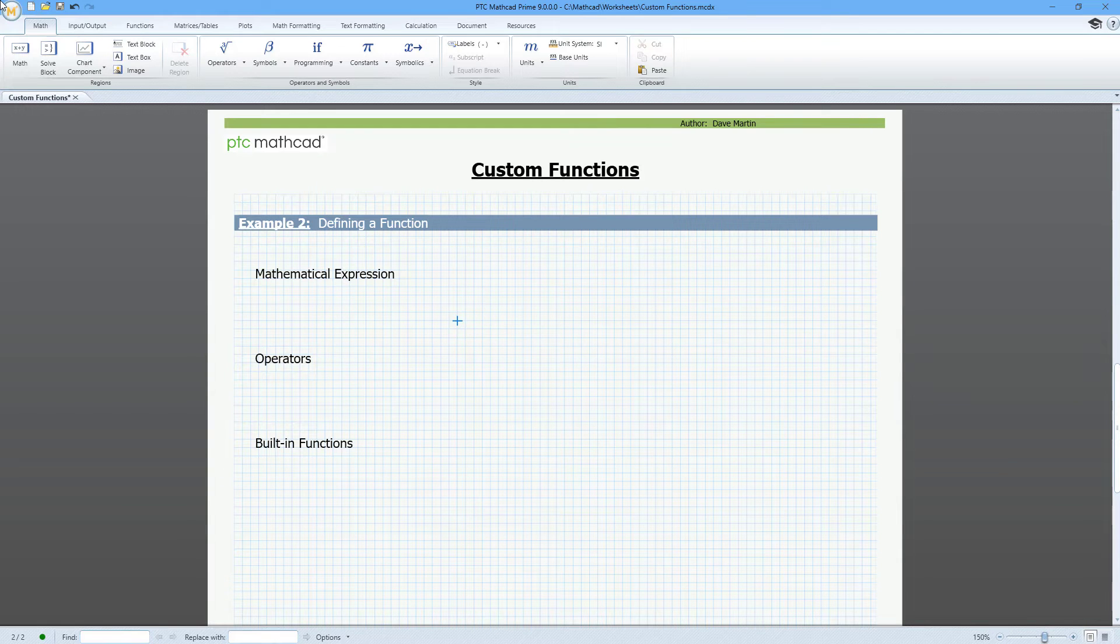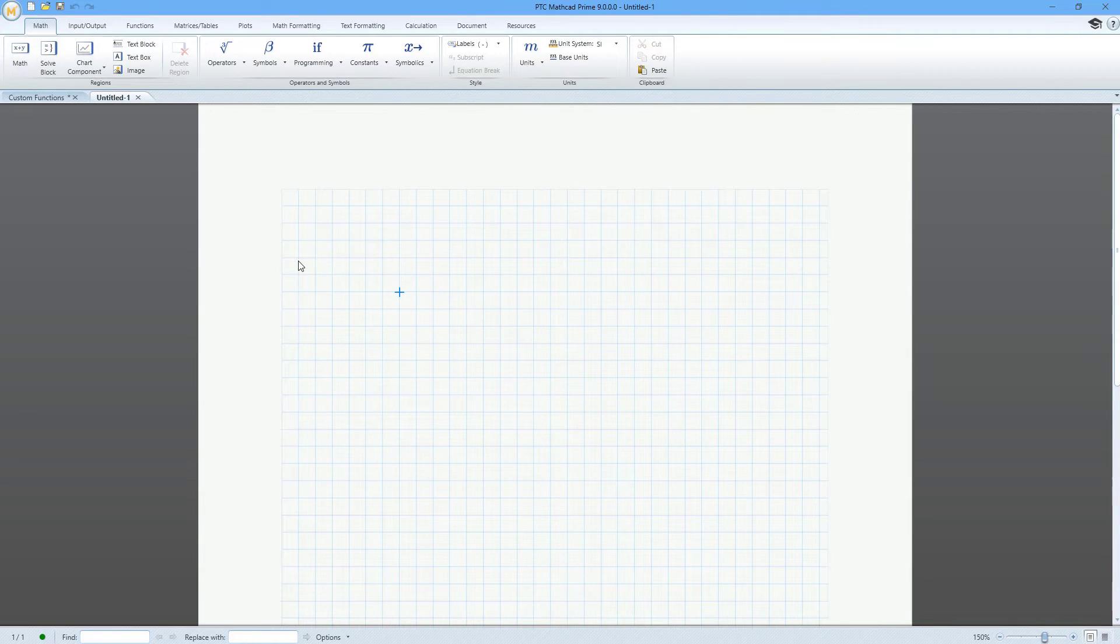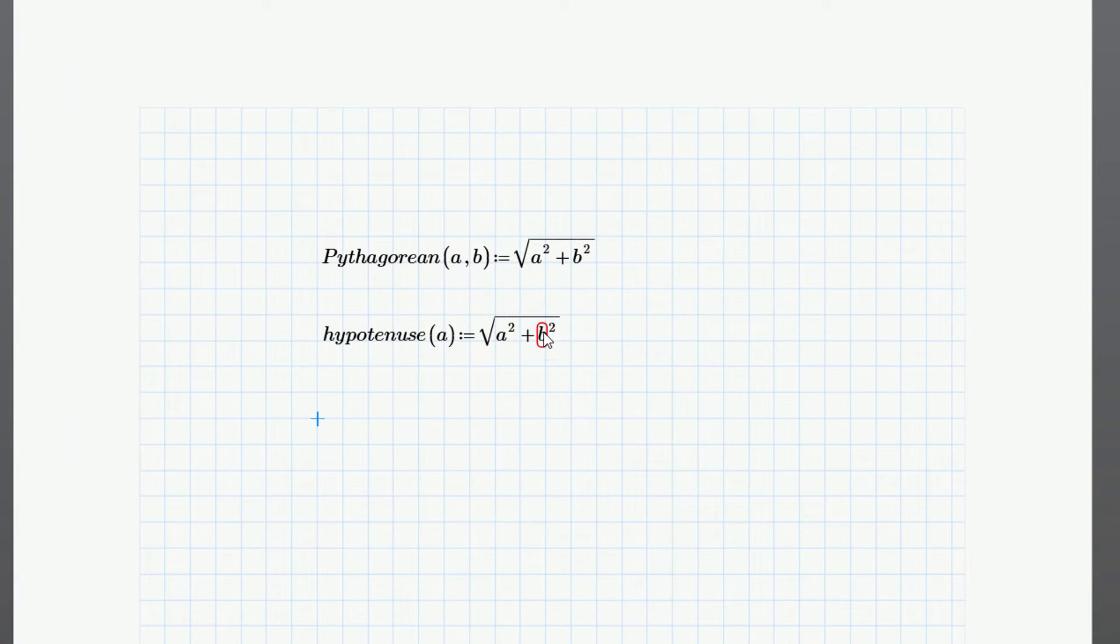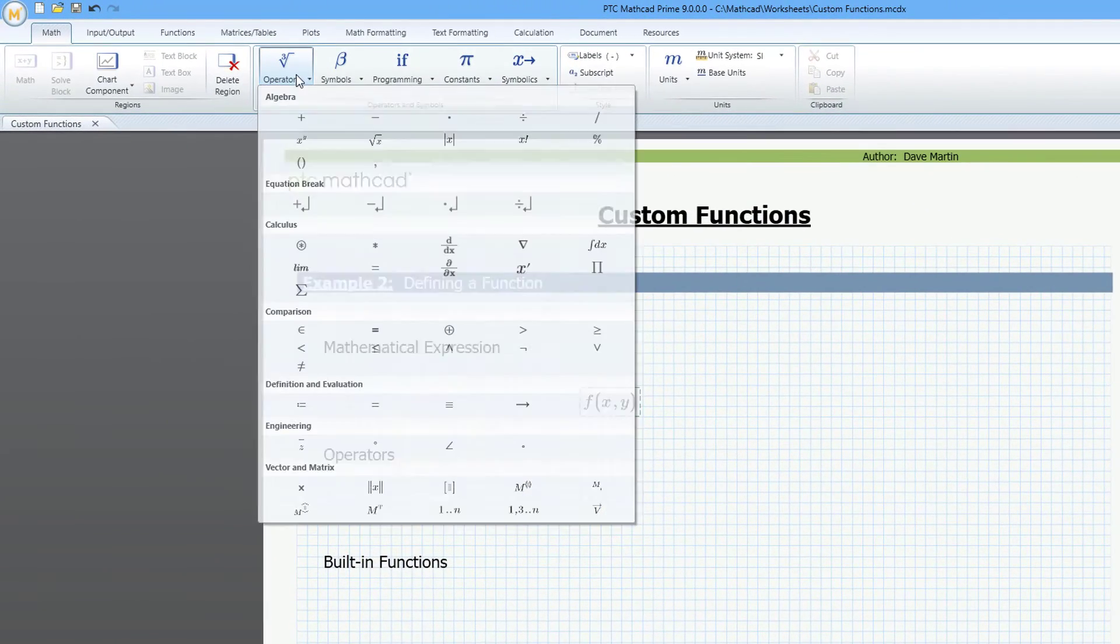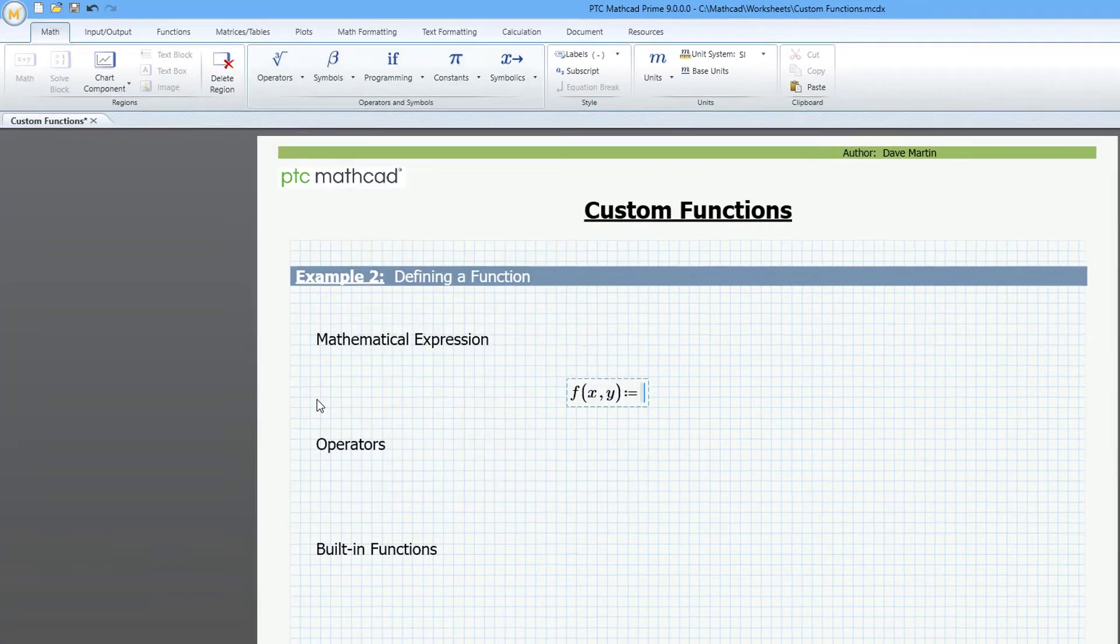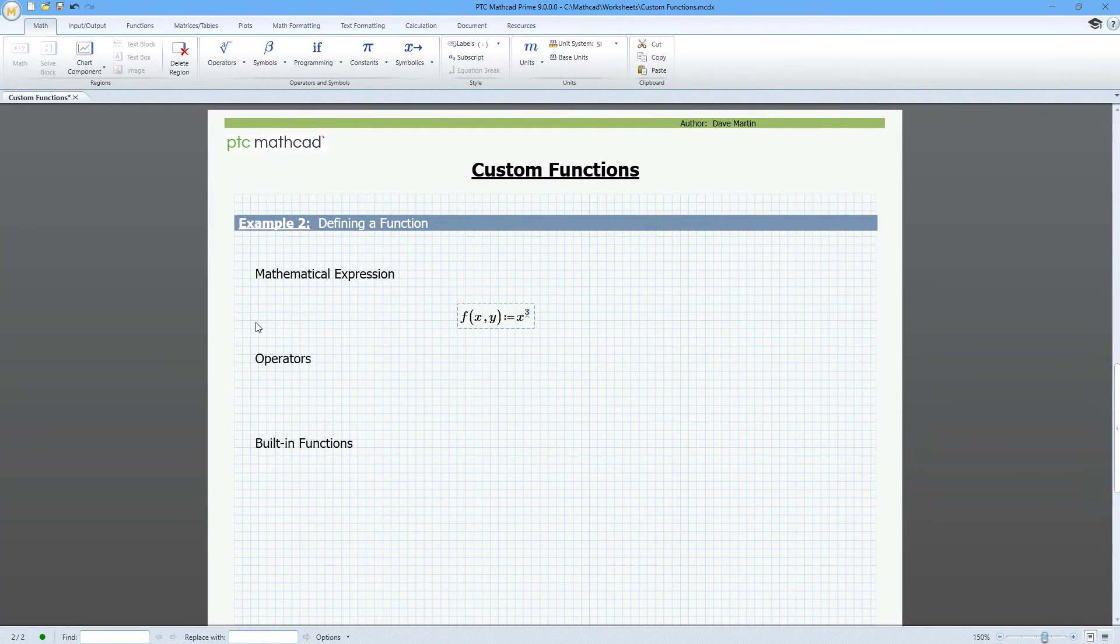After typing the name of the function, use parentheses to specify the arguments or inputs to the function. The inputs do not have to exist as variables prior to the function definition. Their use is defined within the function. However, if you use a variable in the function definition that is not an input and does not previously exist, you will get an error. Use the definition operator to specify a mathematical expression. The shortcut is the colon key.